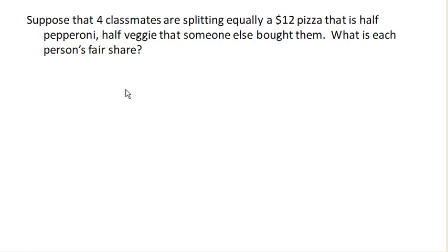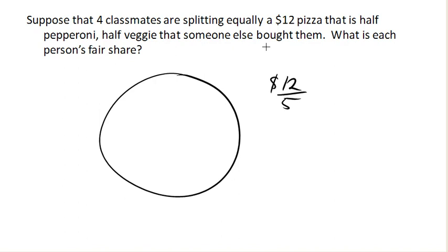So we're going to imagine we have a pizza with a total value of $12. We've got four people and they're sharing it. How much should each person get? It makes sense that we would take the $12, divide it over the four people, and each person is entitled to $3. That is what we call their fair share.